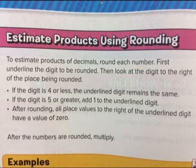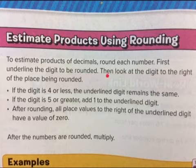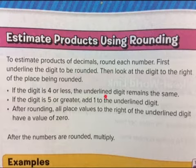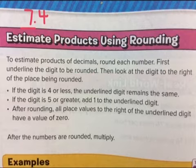Underline the digit to be rounded — for example, with 7.6 you underline the 7. Then look at the digit to the right of the place being rounded. If the digit is 4 or less, the underlined digit remains the same. So if it's 7.4, we underline the 7, and since the digit to the right is 4 or less, we round it to 7.